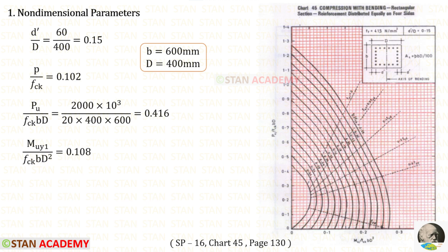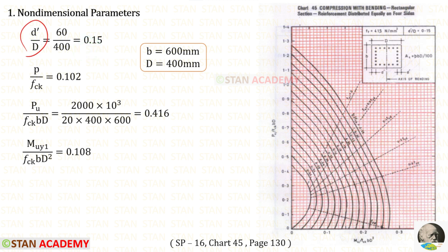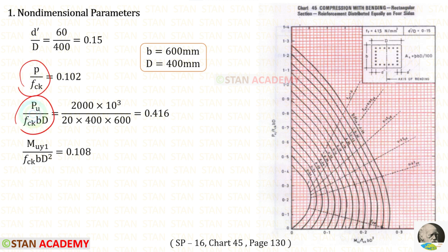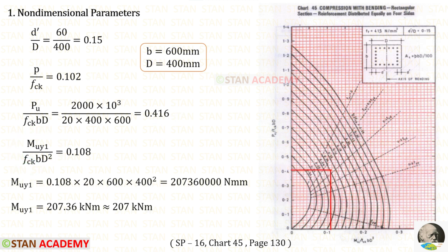Now let us find the non-dimensional parameters in the minor axis. Here we have to interchange B and D — previously D was 600 and B was 400, but here B should be 600 and D should be 400. For D' / D we will get 0.15. Let us open chart number 45, selected because FY is 415, with D' / D = 0.15 and reinforcement equally distributed on four sides. Using the known values of P / FCK and PU / (FCK·B·D), we can find MUY1 / (FCK·B·D²), approximately 0.108, and for MUY1 we will get 207 kN·m.